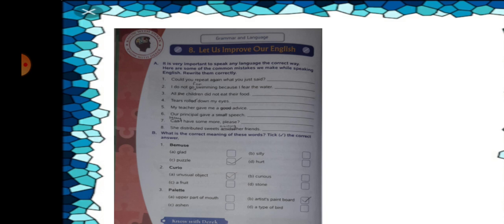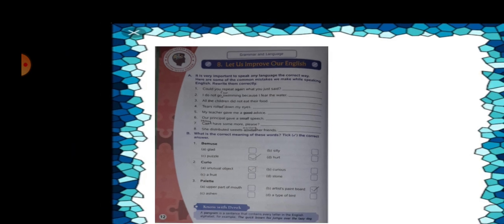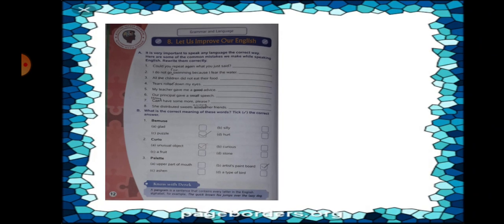You must have heard this word. This is related to drawing and art. The meaning of palette is number B, artist's paint board. You must have seen a palette. It is round and it has got different shapes in it where you pour in different colors and use it with your painting brush. This is an artist's paint board.